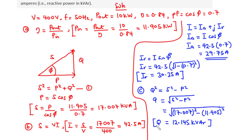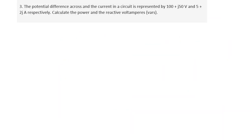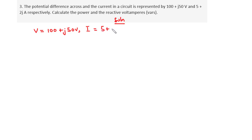Now let's move on to example 3. The potential difference across and the current in a circuit are represented by V = 100 + j50 volts and I = 5 + j2 amperes respectively. Calculate the power and the reactive volt-amperes.